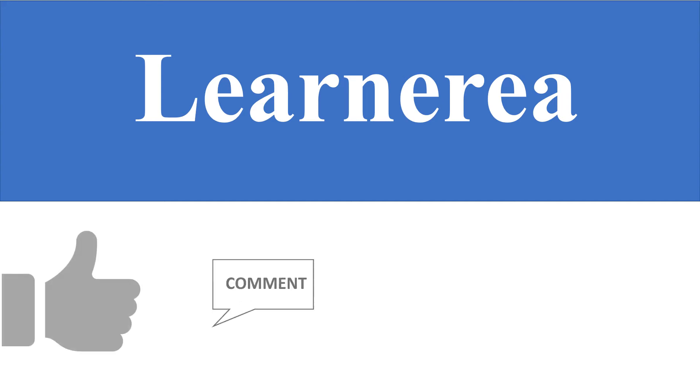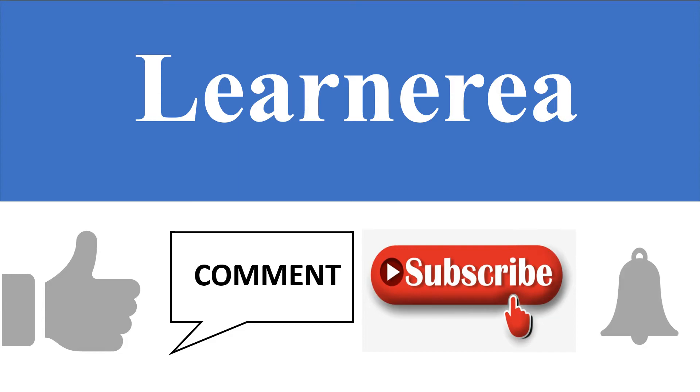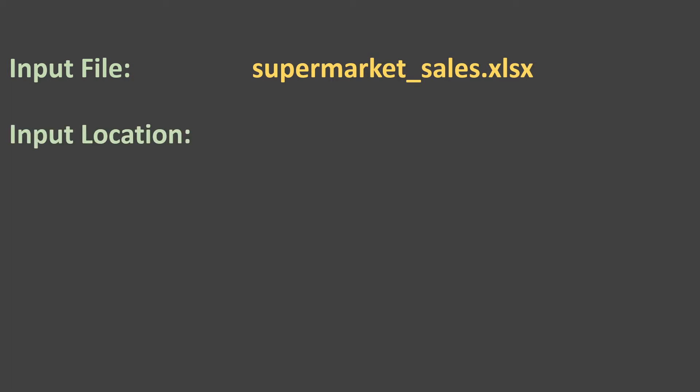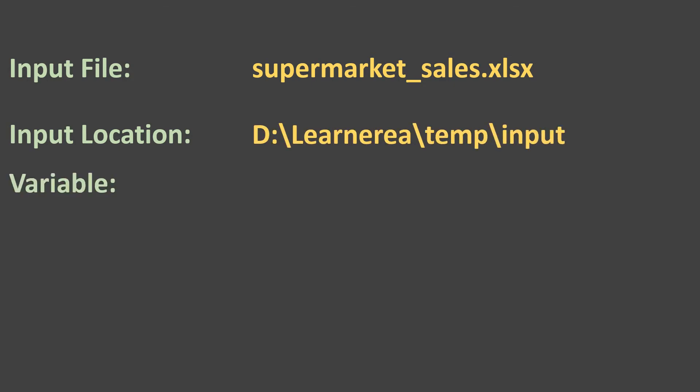To do this, we require a couple of items. First, the input file — in our case, the supermarket sales xlsx file. Second, the input location where this file exists. Third, the variable name in which we want to look for unique values — in my case, that's product line.